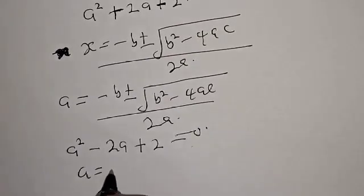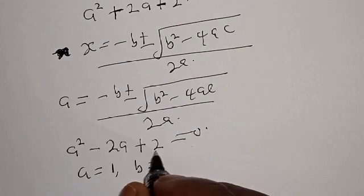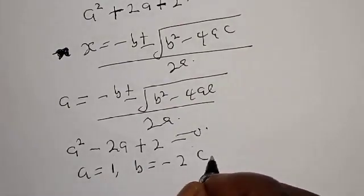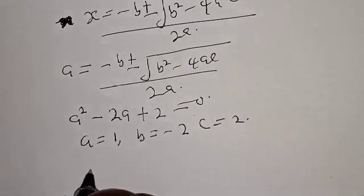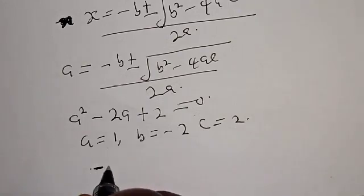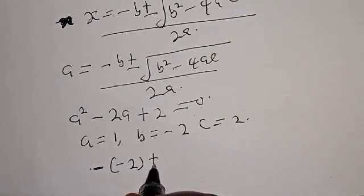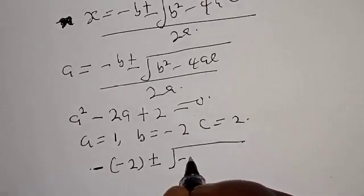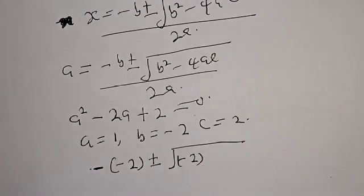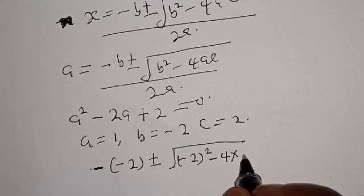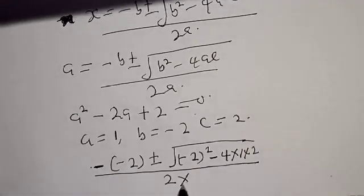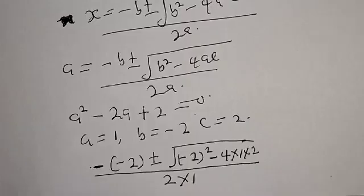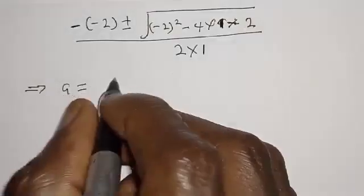Then a is equal to 1, b is equal to minus 2, and c is equal to 2. Then let's substitute into the formula. We have minus into minus 2, plus or minus square root of minus 2 squared, minus 4 multiplied by 1 multiplied by 2, over 2 multiplied by 1.